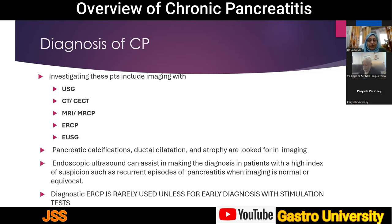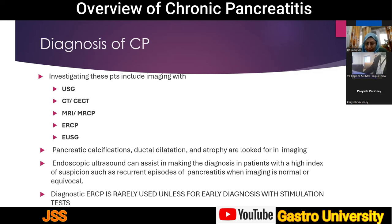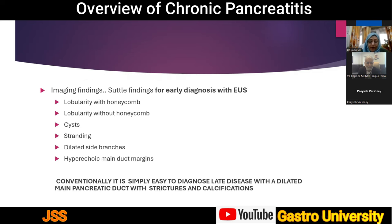In early days of managing chronic pancreatitis, ERCP used to be the gold standard test, but with imaging advances, all modalities now provide appropriate diagnostic information. Key imaging findings to look for include pancreatic calcification, ductal dilatation, and atrophy. Ultrasound can assist in making a diagnosis in patients with high index of suspicion presenting with recurrent episodes of pain when other imaging is normal or equivocal. Diagnostic ERCP is rarely used in the present era.